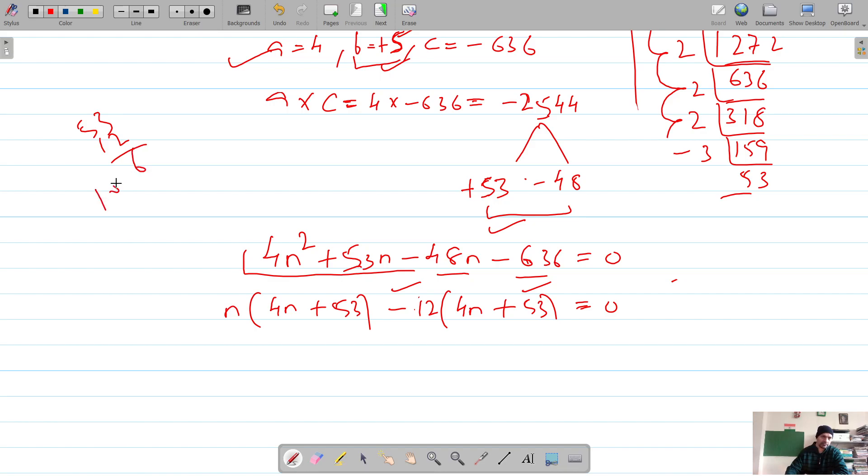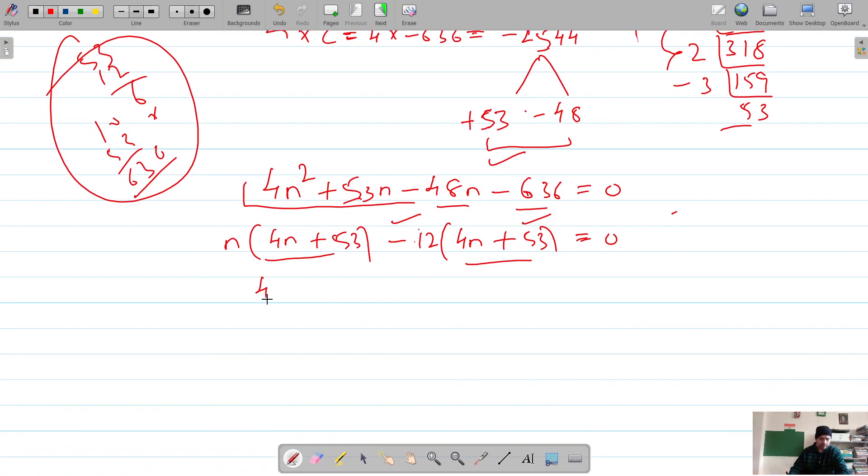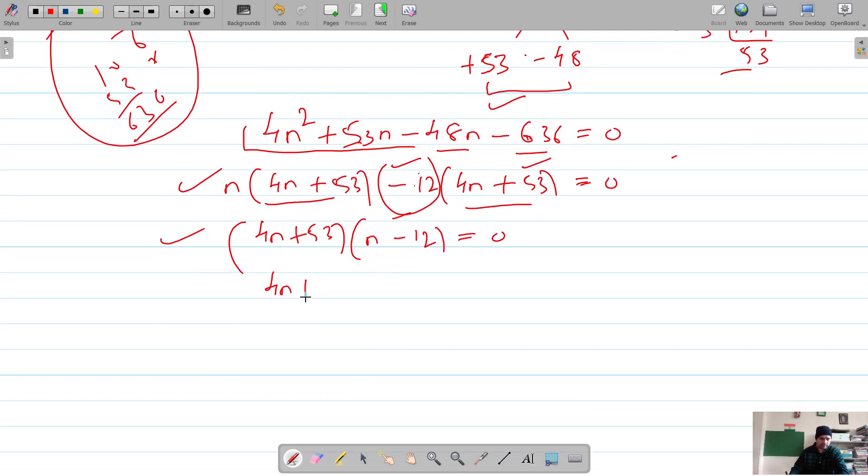This is 53 because 53 into 12 is 636. So now 4n plus 53 is common. So 4n plus 53 is common, here I'm left with n, and this one is negative 12. So now either of this should be 0. So 4n plus 53 equals 0, or n equals 12. If this is 0, which gives us n as negative 53 by 4, which is rejected as n cannot be negative. So our value of n is 12.